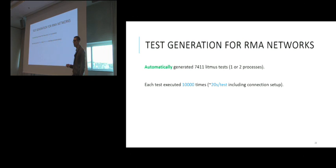Using our framework, we generate automatically over 7,000 litmus tests. Each test, after generating the C program, we run it 10,000 times on the hardware network. And the duration of running the test is about 20 seconds per test. Notice that this is an important difference compared to other, for example, multi-core processor memory models, where tests are run much faster. The reason it takes us 20 seconds per test is that setting up the connection in RMA systems and then ending the connection takes longer.